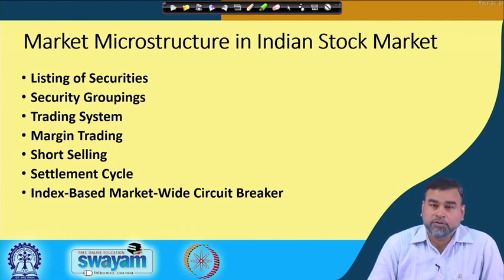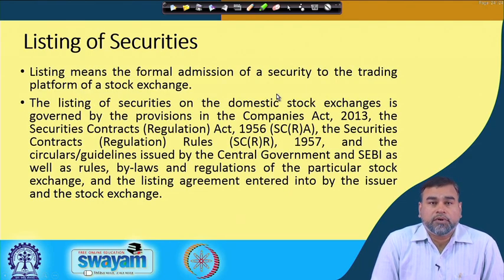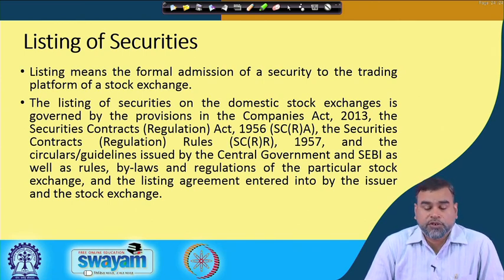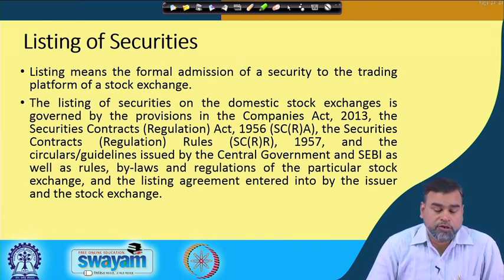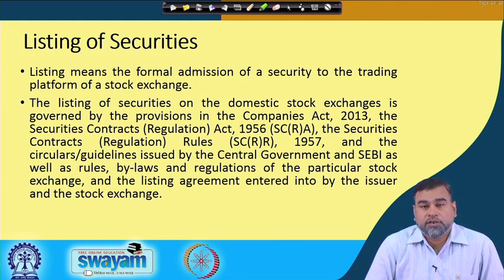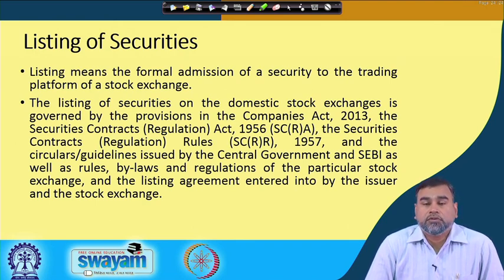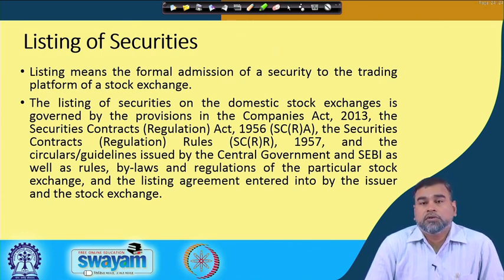Whenever we talk about the listing of securities, remember that whenever IPOs are issued — the first time a company comes to the market and raises money from the public — the company is first listed in the stock exchange, and once listed, those stocks become eligible for trading. So, how are the stocks formally listed, and what are the conditions or criteria they have to fulfill?